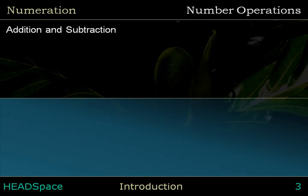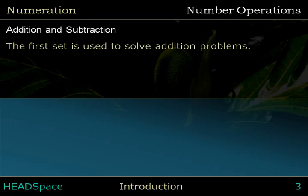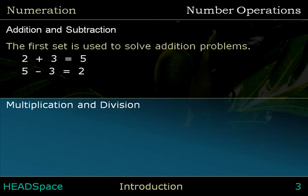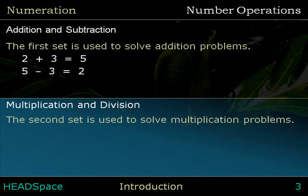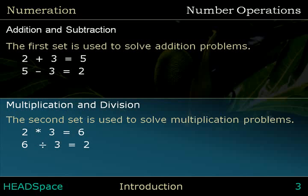The first set is used to solve addition and subtraction problems: 2 plus 3 equals 5, and 5 minus 3 equals 2. The second set is used to solve multiplication problems: 2 times 3 equals 6, and 6 divided by 3 equals 2.